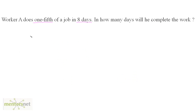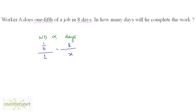Let us solve a question. We are going to solve it traditionally without those formulas. Worker A does one fifth of the job in eight days — in how many days will he complete the work? We have work done and days taken, which are proportional. One fifth of the work is done in eight days; in how many days x will he complete the total work, which is 1? So we have 1/5 = 8/x, therefore x = 8 × 5 = 40 days. The total work is done in 40 days.